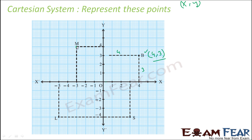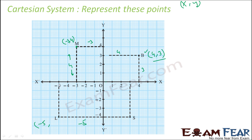Let's find point M and L. For point M, x-coordinate is minus three, y-coordinate is four. For point L: x-coordinate — distance along the x-axis — is minus five, so x is minus five. The y-coordinate — distance along the y-axis — is minus four. So point L is minus five comma minus four.